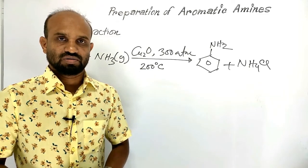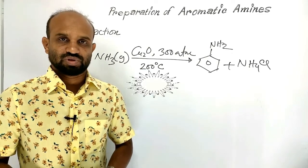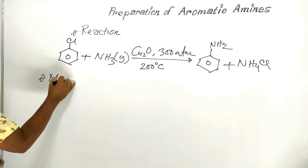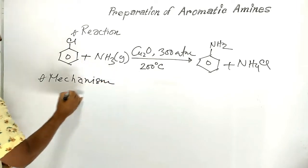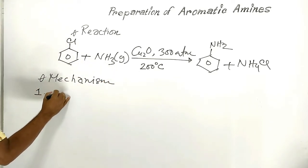Now let's see the mechanism of the reaction. Mechanism of the reaction. Step 1: Ammonia is treated with copper oxide.